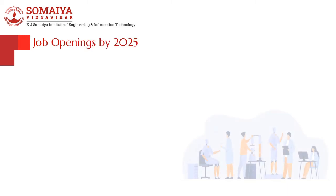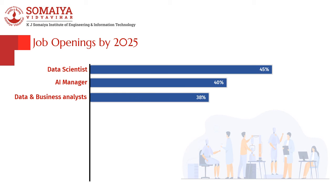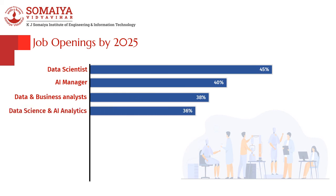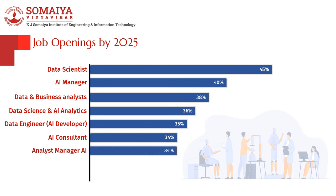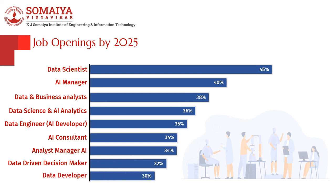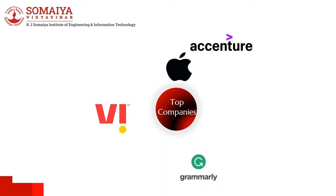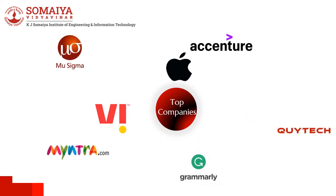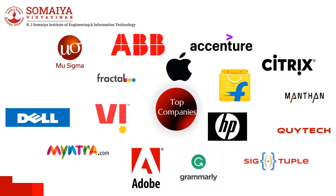There will be numerous job opening opportunities across various sectors, as seen in the following graph: Data Scientist – 45%, AI Manager – 40%, Data and Business Analysts – 38%, Data Science and AI Analytics – 36%, Data Engineer and AI Developer – 35%, AI Consultant – 34%, Analyst Manager (AI) – 34%, Data-driven Decision Maker – 32%, Data Developer – 30%. Top companies recruiting AI and DS graduates include Apple, Accenture, Vodafone Idea, Grammarly, Quitec, Mintra, Mu Sigma, Manthan, Flipkart, Adobe, Sigtuple, Fractal, HP, Citrix, Dell, and Juniper Networks. The following are the contact details for admission inquiries.